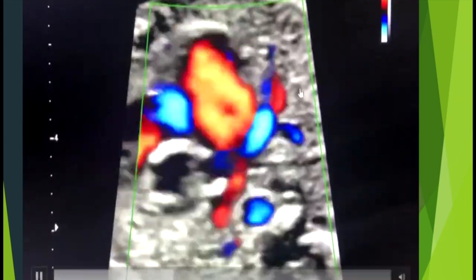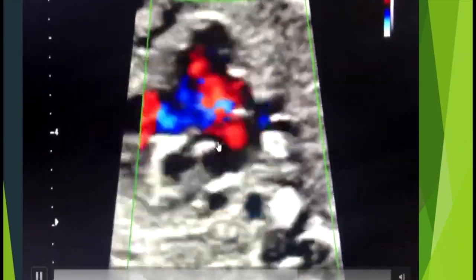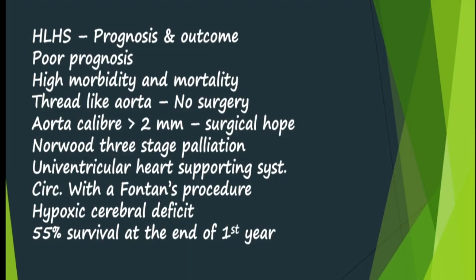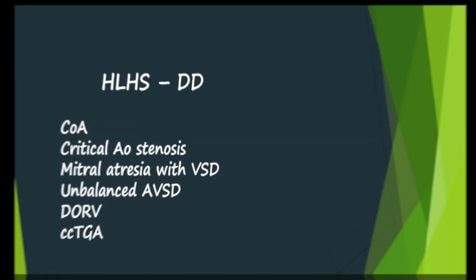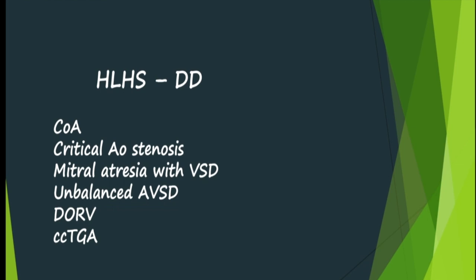Prominent pulmonary veins and no forward flow through the mitral valve can also be seen. HLHS carries a very poor prognosis due to severe underdevelopment of the left ventricle and LVOT. If the aorta is thread-like there is no surgical option, but if the aortic calibre is more than 2 mm surgery becomes feasible with 55% survival at one year. Differentials include coarctation of aorta, critical aortic stenosis, mitral atresia with VSD, unbalanced AVSD, DORV, and CCTGA.